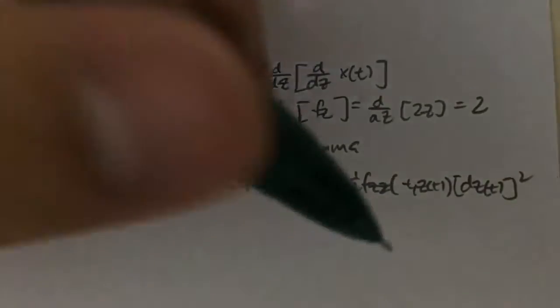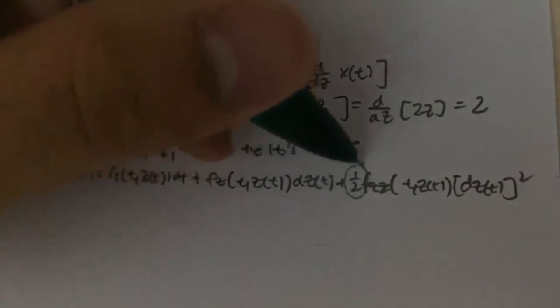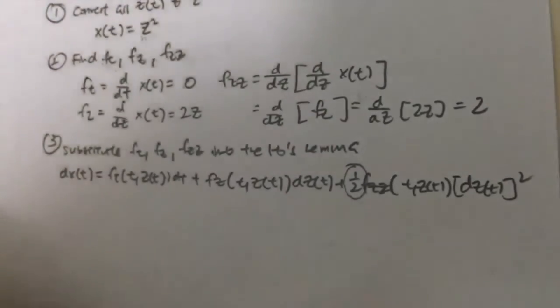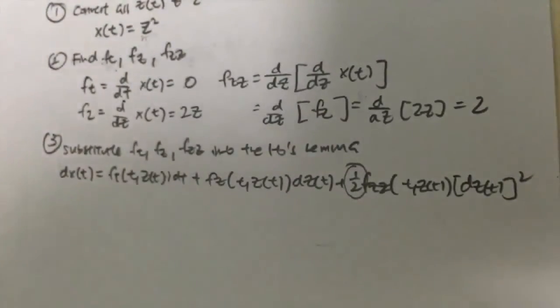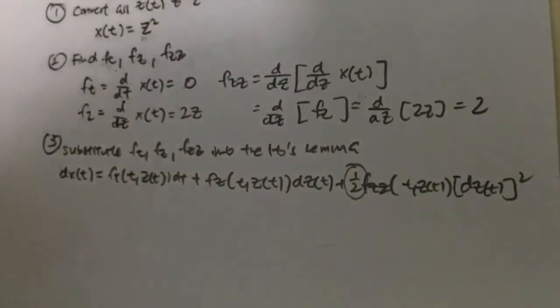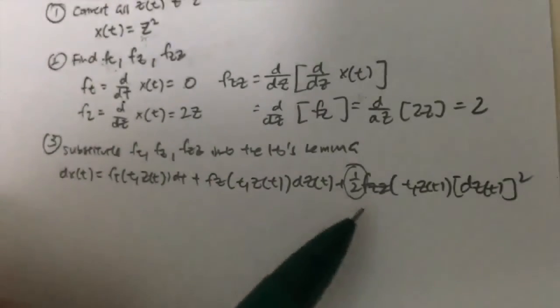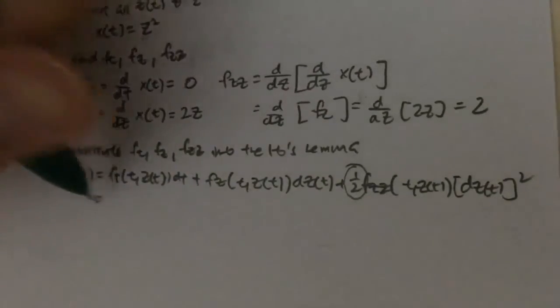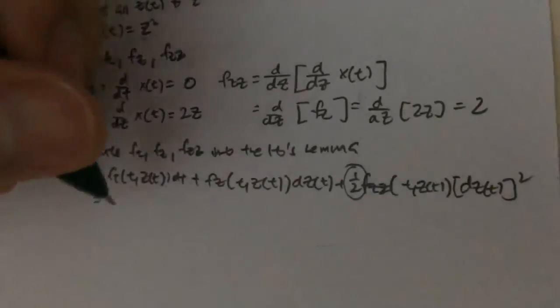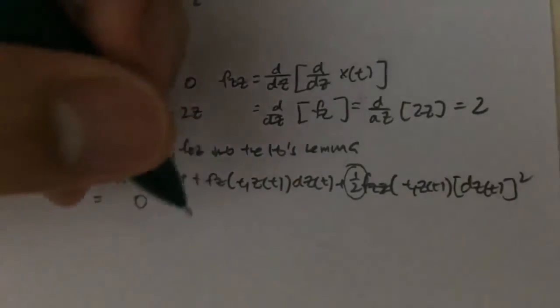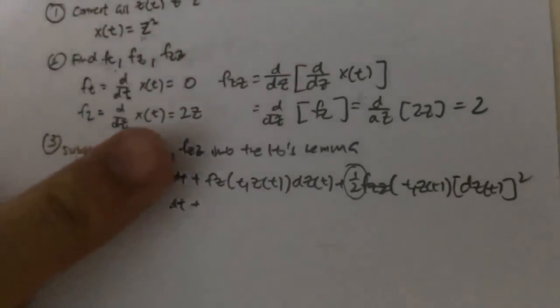This is our Ito's Lemma. One thing that you'll need to take note is that there is this half down here in the last term where people usually actually forget about this half at the last term. So we plug in our F_t, which is, in this case, 0 dt, plus my F_z is my 2Z.